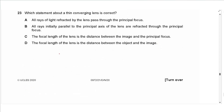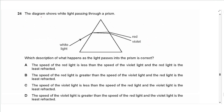Question 23 says: which statement about a thin converging lens is correct? Not all rays refracted by the lens pass through the principal focus, so A is incorrect. All rays initially parallel to the principal axis are refracted through the principal focus — yes, that is correct, so B is the answer. C and D refer to focal length as a distance involving the image or object, which is not correct.